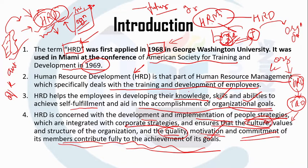To summarize, human resource development is a part of human resource management which focuses on training and development of human resources for both the present and future needs of the organization. It aims at achieving organizational goals by developing a culture, creating values, and building motivation, quality, and commitment within the organization.